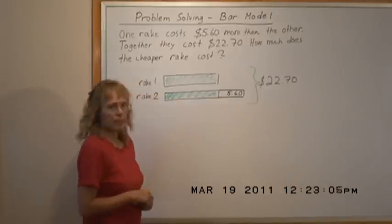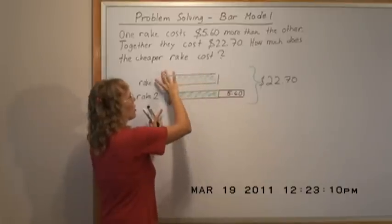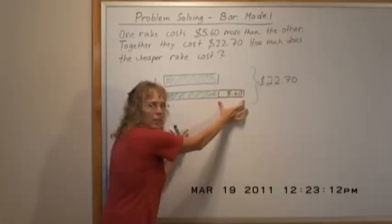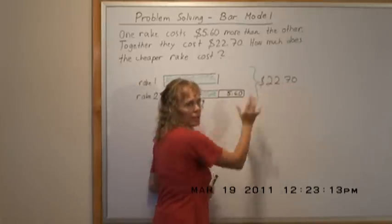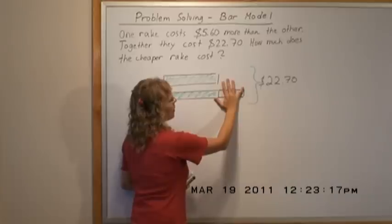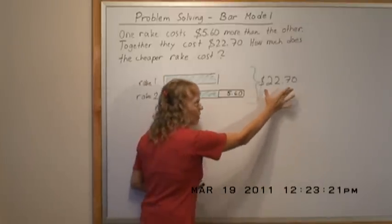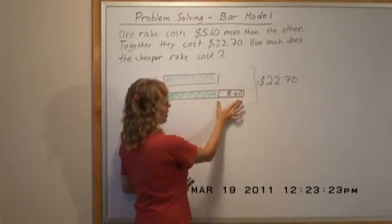To solve it, we will find out how much one of these green parts is. There's these two green parts and $5.60 makes a total of $22.70. Therefore we take away this $5.60 and then we would have these two green parts left, so we will subtract from $22.70, $5.60.